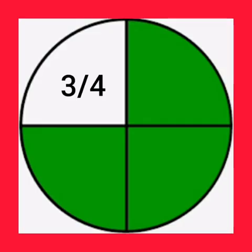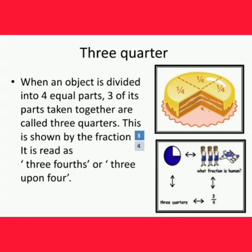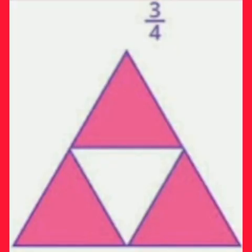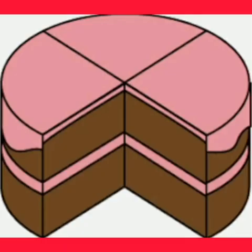Three-fourths. When a whole is divided into four equal parts, three of its parts taken together are called three-quarters. This is shown by the fraction 3 upon 4. It is read as three-fourths or three upon four. Let's see some examples: three-fourths of a triangle, three-fourths of a cake.